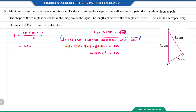Moving 0.4375 to the right hand side gives x⁴ equals 135 divided by 0.4375, which equals 16. We can write 16 as 2⁴. Since both sides have the same power of 4, we can compare the bases directly. Therefore x equals 2.